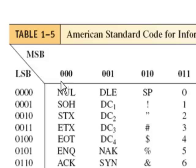The null character is 0, 0, 0, 0 in the most significant bits, and then the least significant bits are 0, 0, 0 as well. So this would be 7 different zeros.